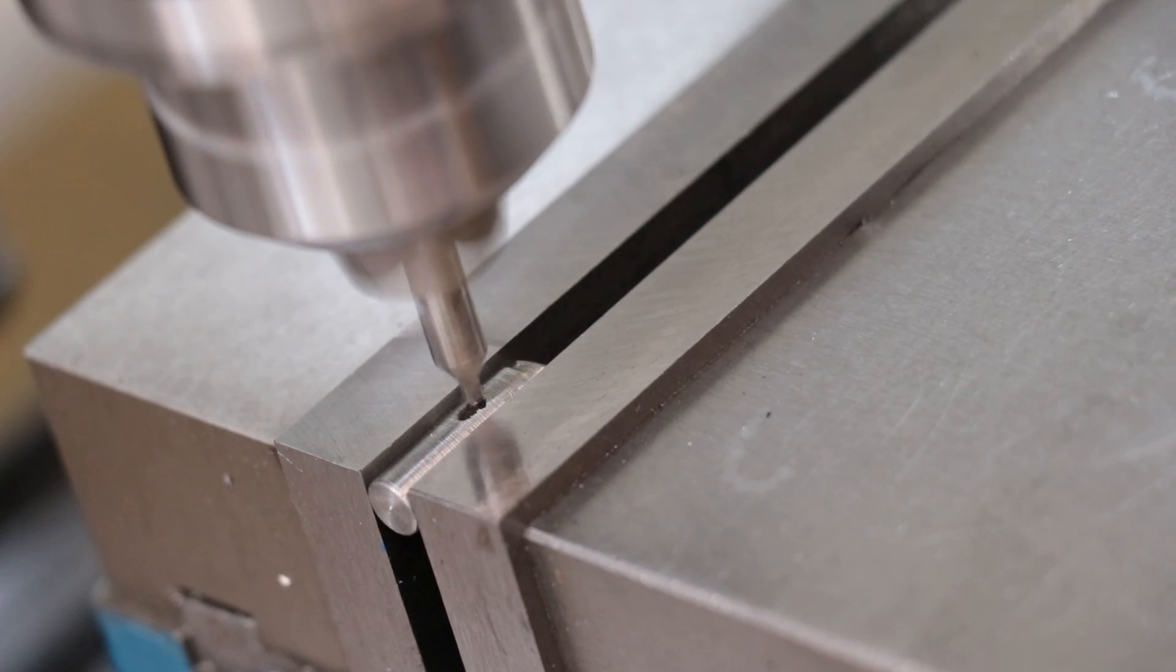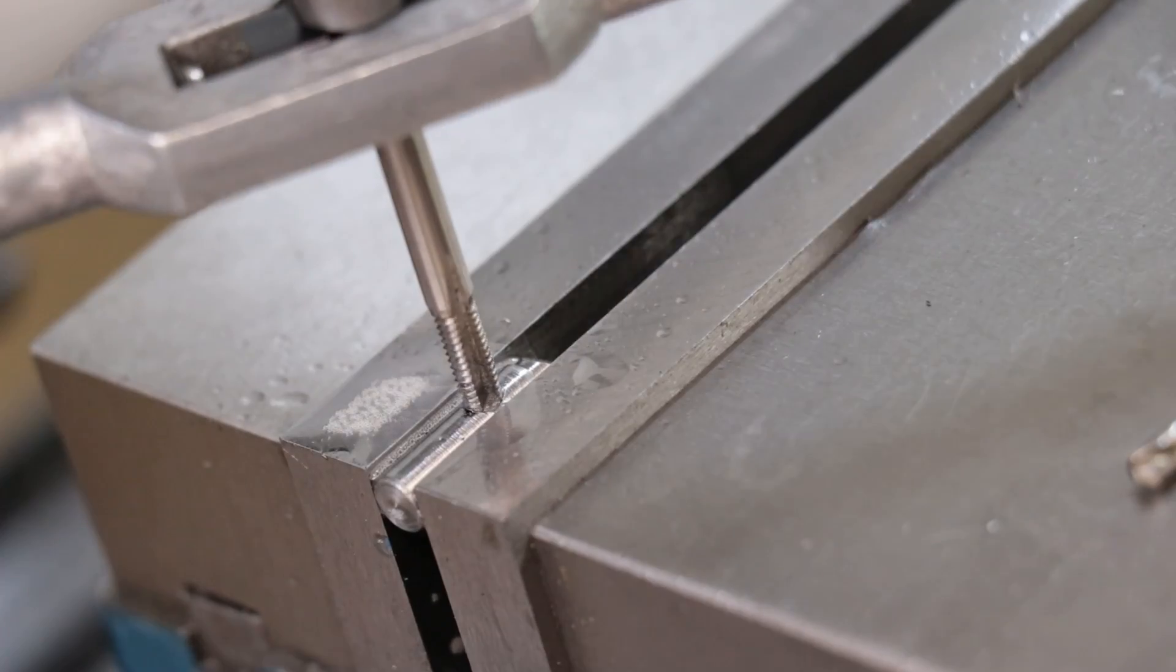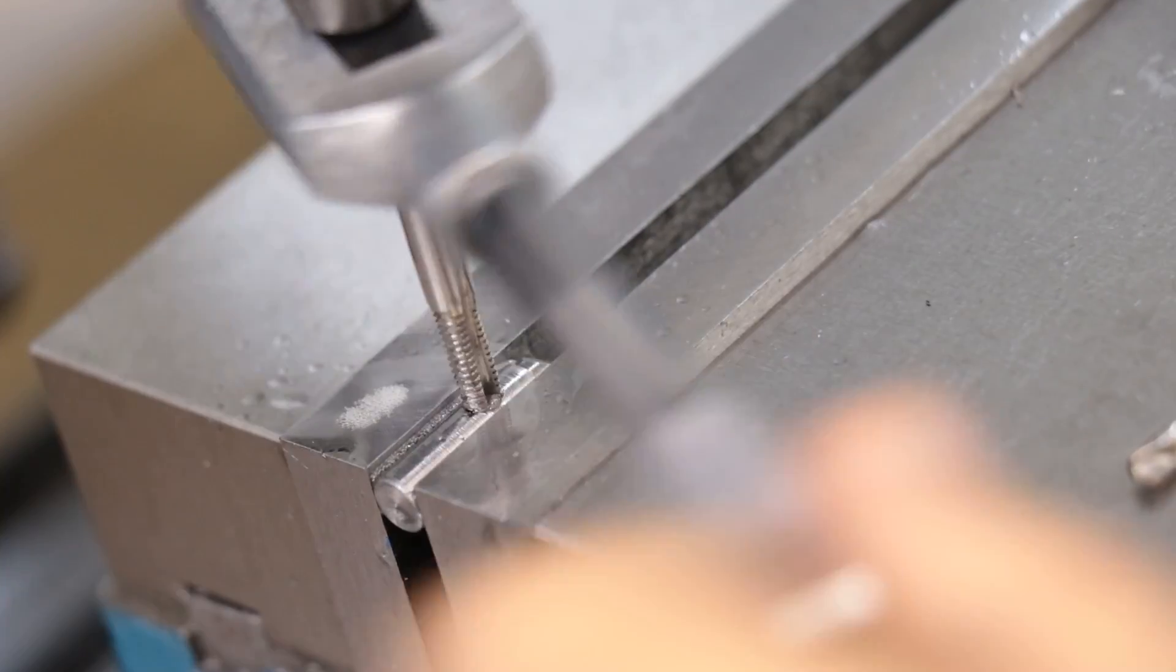And after that, I'll drill through and tap an M4 thread through the pin and then I'll machine up a little lever which will allow me to select which way to ratchet.